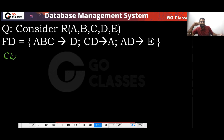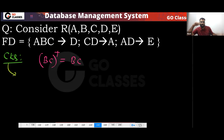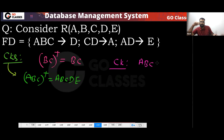First you find the candidate keys. So tell me, what will be the candidate keys? You can notice ABCDE. BC is not on the RHS of any FD in these functional dependencies — B and C are not on the RHS. So only B and C can determine B and C. So B, C will be part of every candidate key, but they cannot determine everything. So let me check ABC. What will be ABC-plus? ABC-plus will be ABCD, and then AD can determine E. So ABC will be a candidate key.